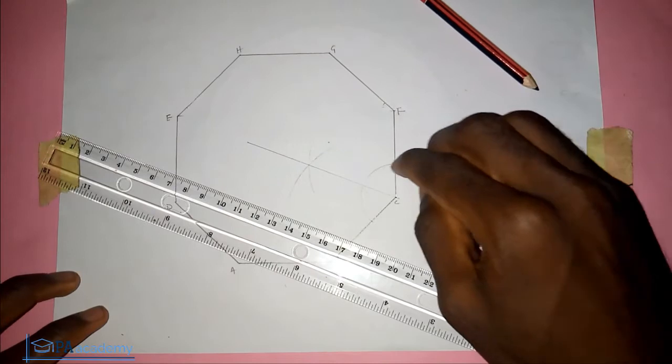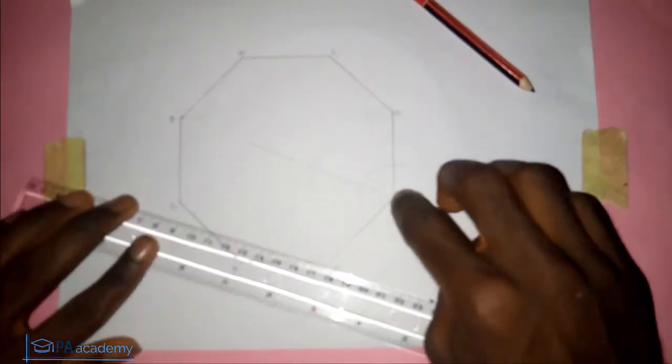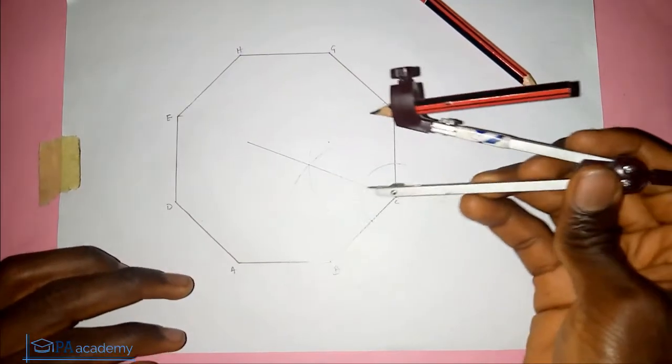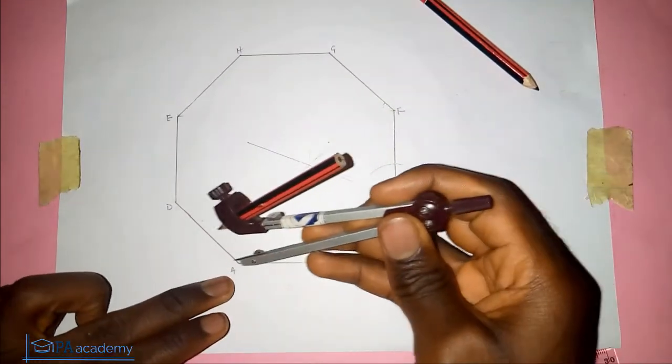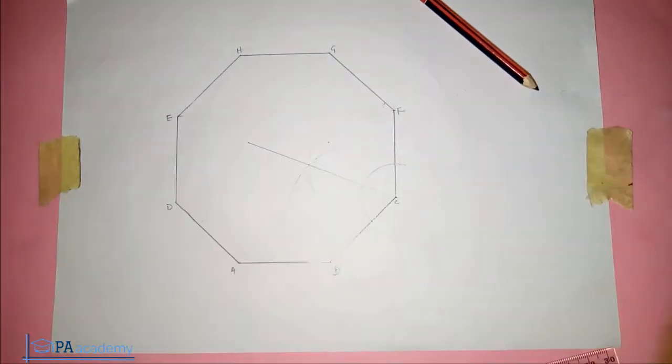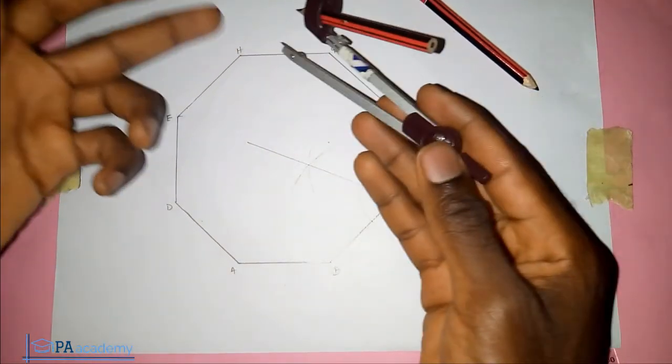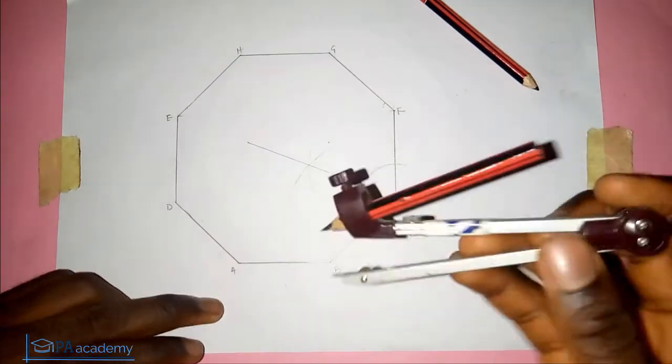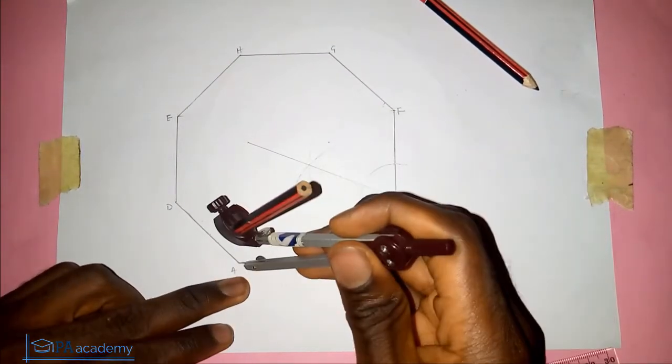With that, we've just bisected angle C. What we've just done to angle C, you apply the same thing to angle A. Don't forget, I said you're just going to bisect any two angles. I decided to use angle A and angle C, but you can use angle E and angle G, angle H and angle G, like that.